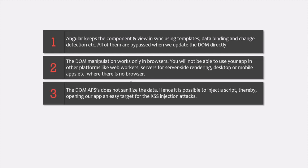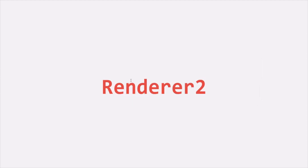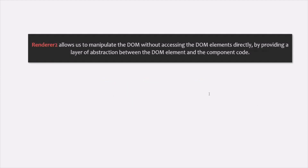Because of these reasons, accessing and manipulating the DOM element directly using the nativeElement property of ElementRef is not recommended. In this lecture, we are going to learn a better way of manipulating the DOM without accessing it directly — and that is by using the Renderer2 class. Renderer2 is a class that allows us to manipulate the DOM by providing a layer of abstraction between the DOM element and the component code.